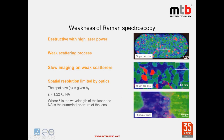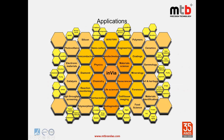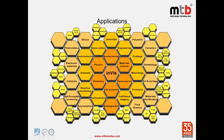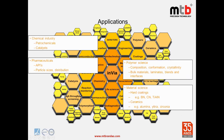Raman spectroscopy is able to provide information on composition identification, stress/strain state, crystal symmetry and orientation, crystal quality, amount of material, and temperature dependence. Applications cover a broad range: SERS for surface-enhanced Raman scattering, bio-Raman, forensic analysis, chemistry, petrochemical, catalysts, pharmaceutical, polymer science, material science, earth science, photovoltaics, semiconductor, and carbon materials.